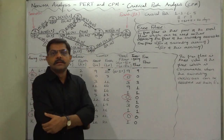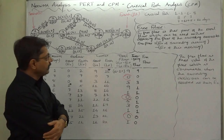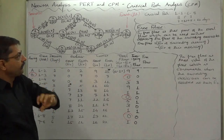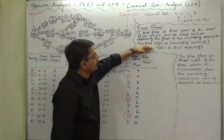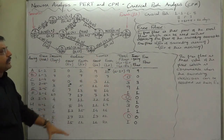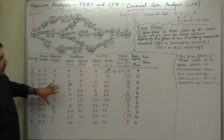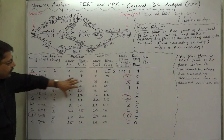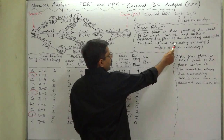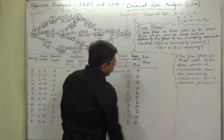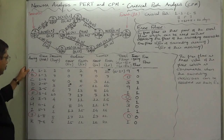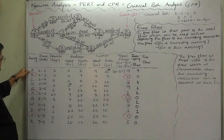The formula — please, instead of only trying to remember the formula, do try to understand how the free float is calculated from this chart. The formula can be written as: earliest start time of the succeeding activity minus earliest finish time of the current activity.